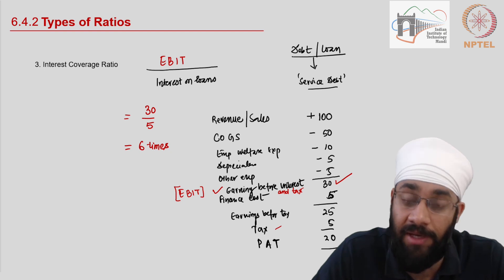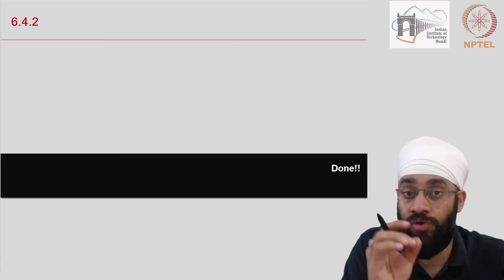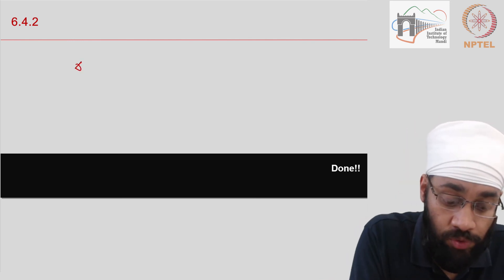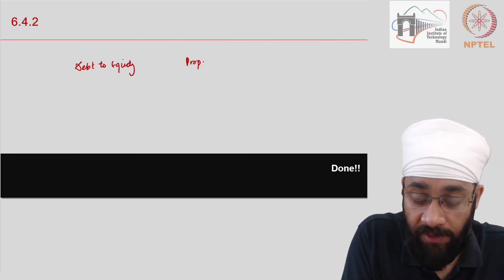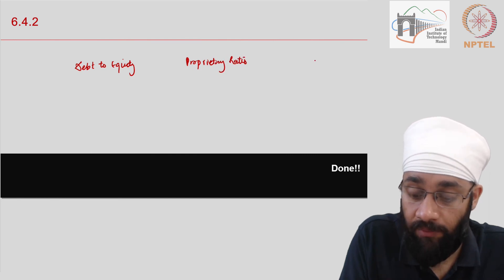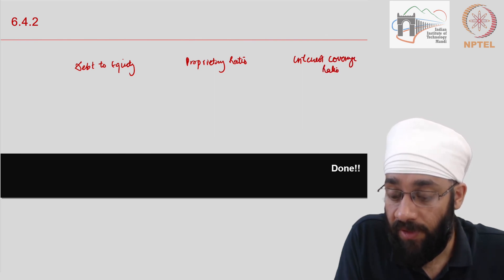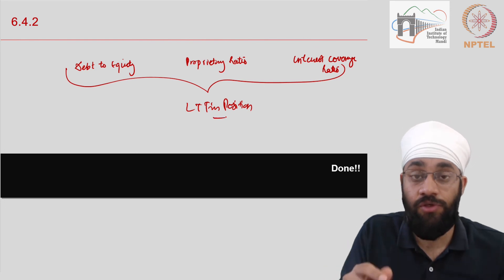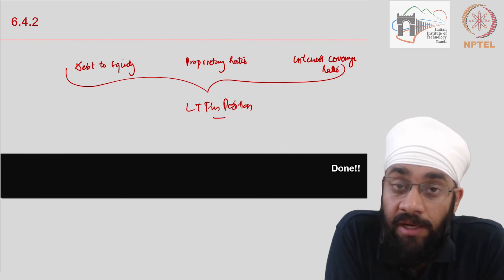We have discussed three ratios to judge the long-term financial position of the company: first, debt-to-equity ratio (external liabilities divided by internal liabilities); second, proprietary ratio; and third, interest coverage ratio. These three ratios help us judge the solvency position of the business. In the next video, we will do a tutorial to understand these three indicators in more detail.